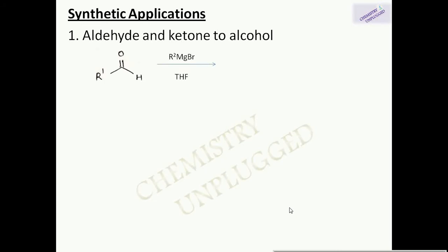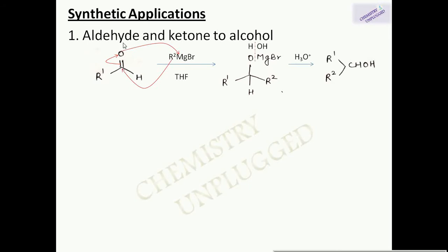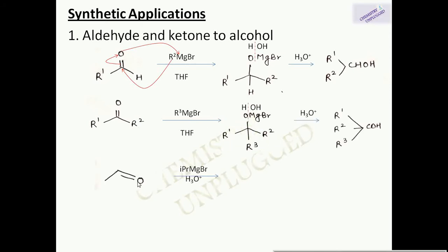Synthetic application 1: reaction with aldehydes and ketones to form alcohols. With an aldehyde, the C=O bond breaks, oxygen gets a negative charge and combines with MgBr, and the carbanion attacks the carbonyl carbon giving a tetrahedral intermediate. After hydrolysis with H₃O⁺, we get a secondary alcohol. Using formaldehyde gives a primary alcohol.